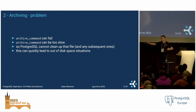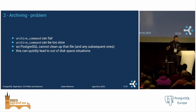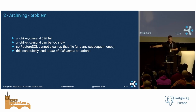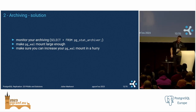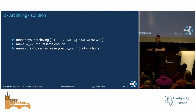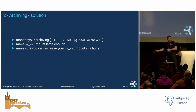Archiving is strictly sequential — PostgreSQL archives one file at a time, so 10 seconds of connection latency per file is quite bad. When archiving is stuck, PostgreSQL cannot clean up that file or any subsequent ones, which can quickly lead to out-of-disk-space situations. You need to definitely monitor your archiving — there's a view for that in PostgreSQL. Make your pg_wal mount large enough, maybe to cover a few hours, and ensure you can increase it quickly using logical volume management or similar.